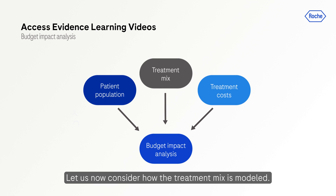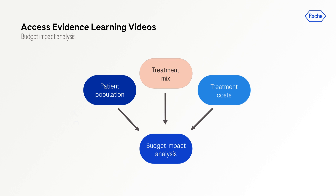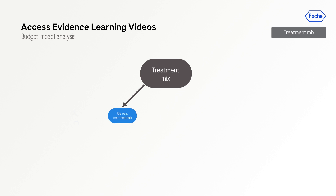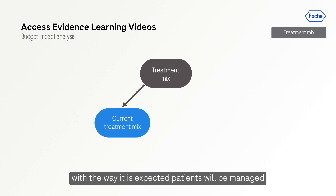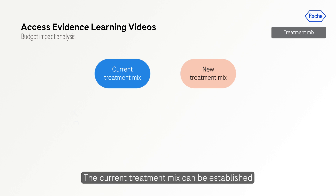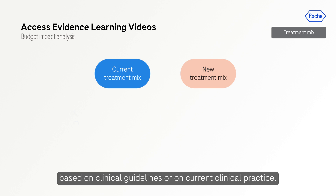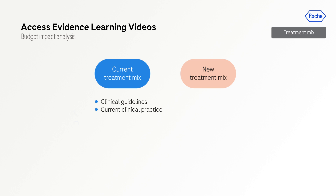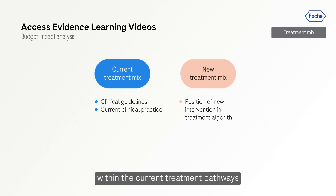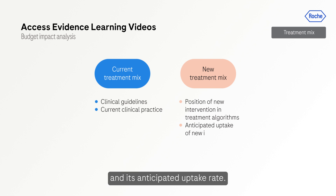Let us now consider how the treatment mix is modeled. A budget impact analysis will compare current management — the current treatment mix — with the way patients are expected to be managed following the introduction of the new intervention, which is the new treatment mix. The current treatment mix can be established based on clinical guidelines or on current clinical practice, for example through market research. However, the new treatment mix will need to be estimated based on the expected position of the new intervention within the current treatment pathways and its anticipated uptake rate.